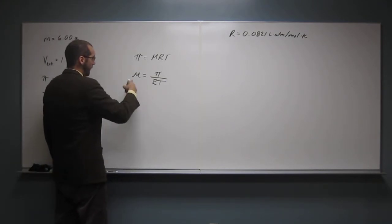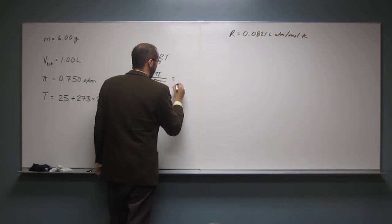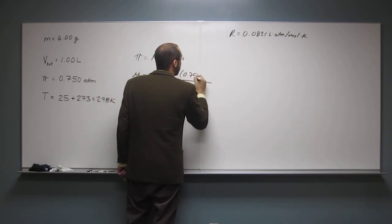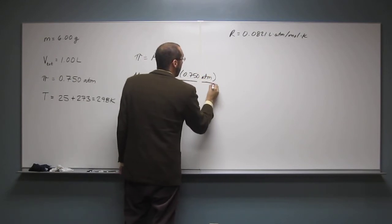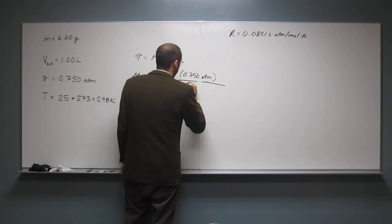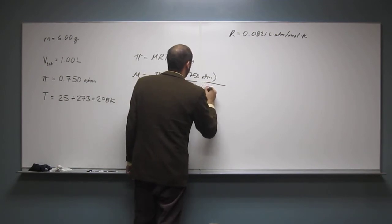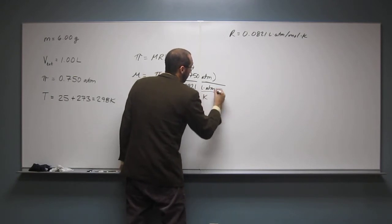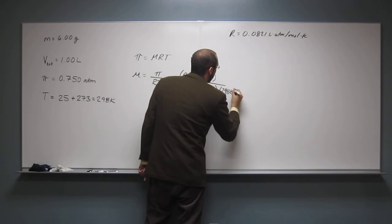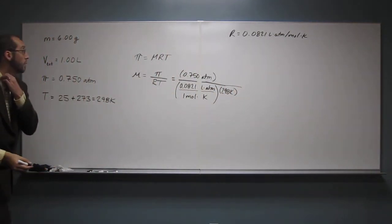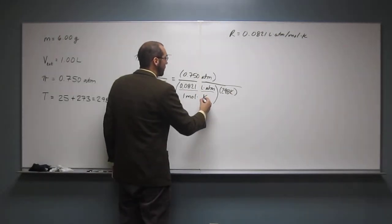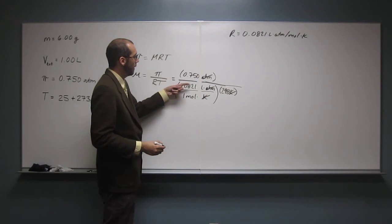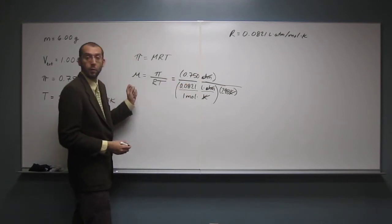Okay, so effectively, now we can plug and chug for this part of the problem. So pi 0.750 atm divided by 0.0821 liters atm divided by 1 mol kelvin. Multiply that by 298. So hopefully everybody got to that point. So let's now just cancel out the units that we got. So kelvin and atm cancel out. And 1 divided by liters divided by moles is going to be moles per liter, which is molarity units.